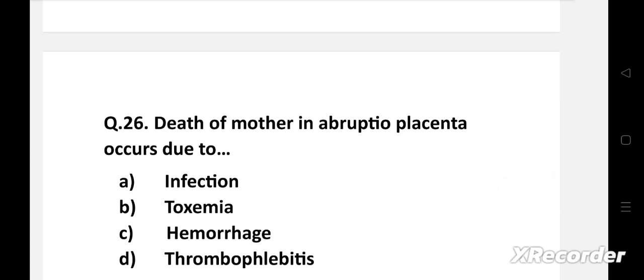Next question: Death of mother in abruptio placenta occurs due to - Option A: Infection, B: Toxemia, C: Hemorrhage, D: Thrombophlebitis.